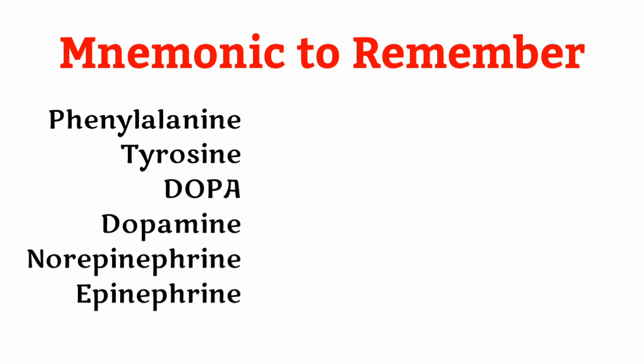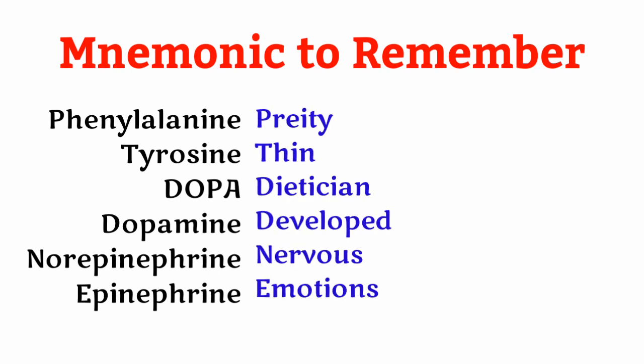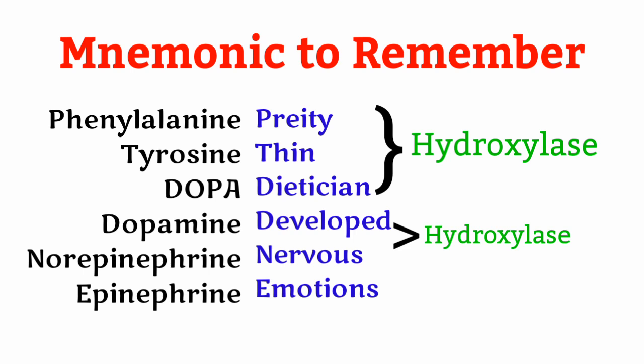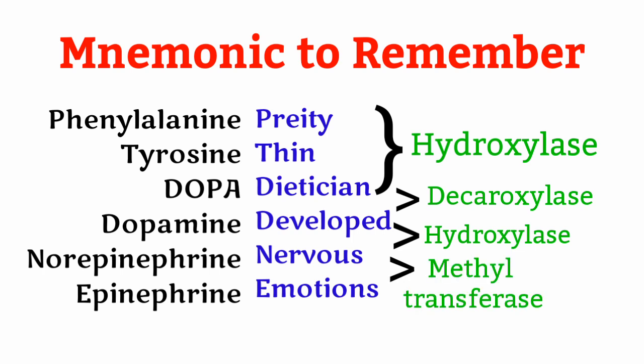Now we'll see a mnemonic to remember this pathway. The sequence is: phenylalanine, tyrosine, DOPA, dopamine, norepinephrine, and epinephrine. The mnemonic is: 'Pretty Thing Dietitian Developed Nervous Emotion' — Pretty (phenylalanine), Thing (tyrosine), Dietitian (DOPA), Developed (dopamine), Nervous (norepinephrine), Emotion (epinephrine). The enzyme for the first, second, and fourth steps is hydroxylase; the third step is decarboxylase; and the fifth is methyltransferase.